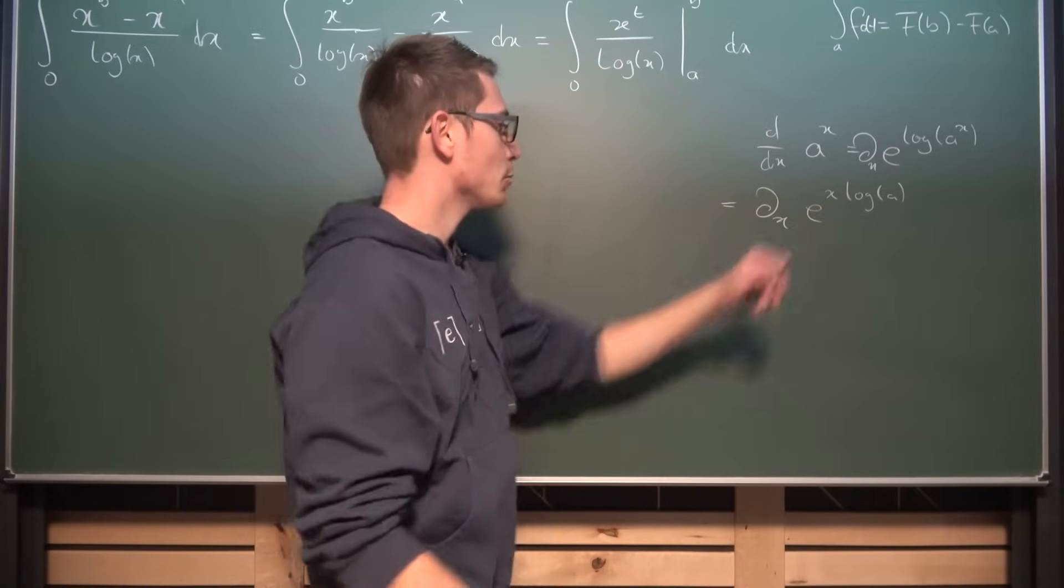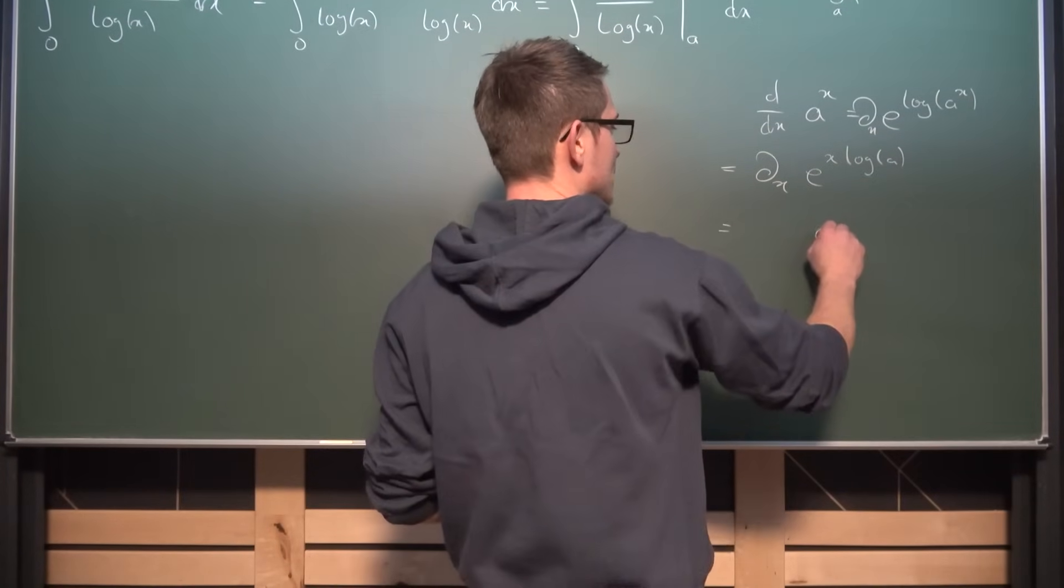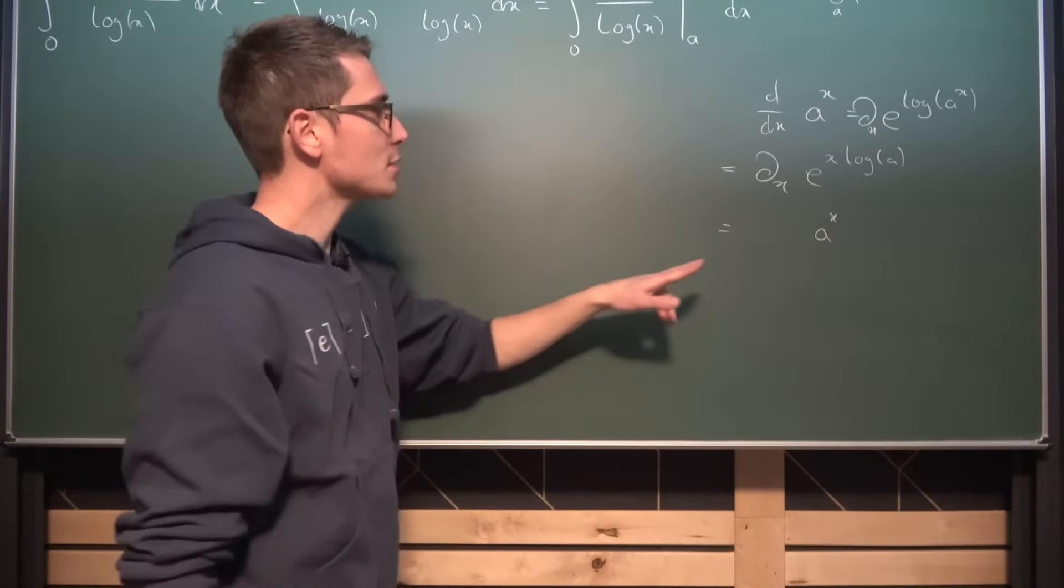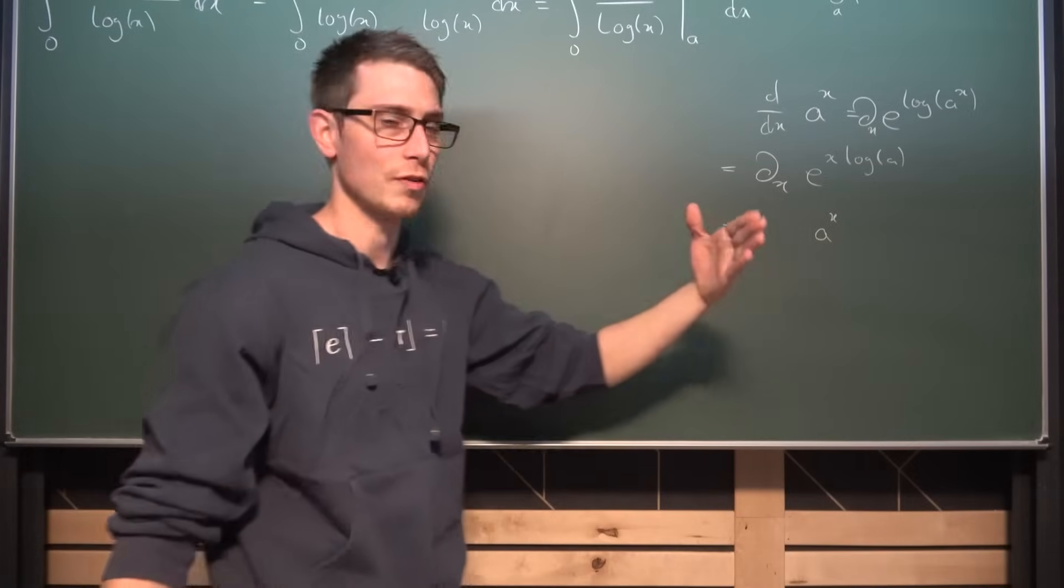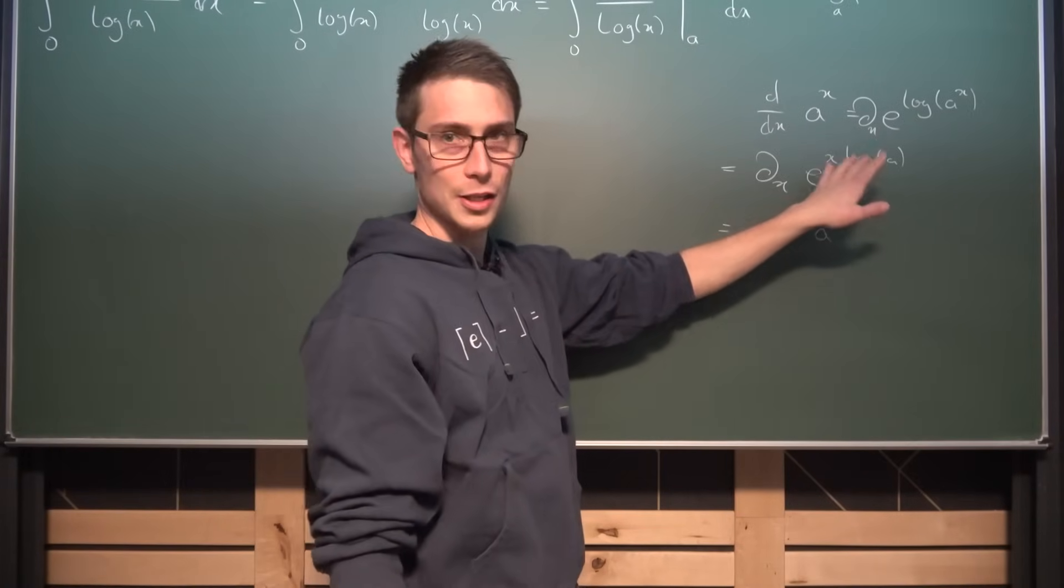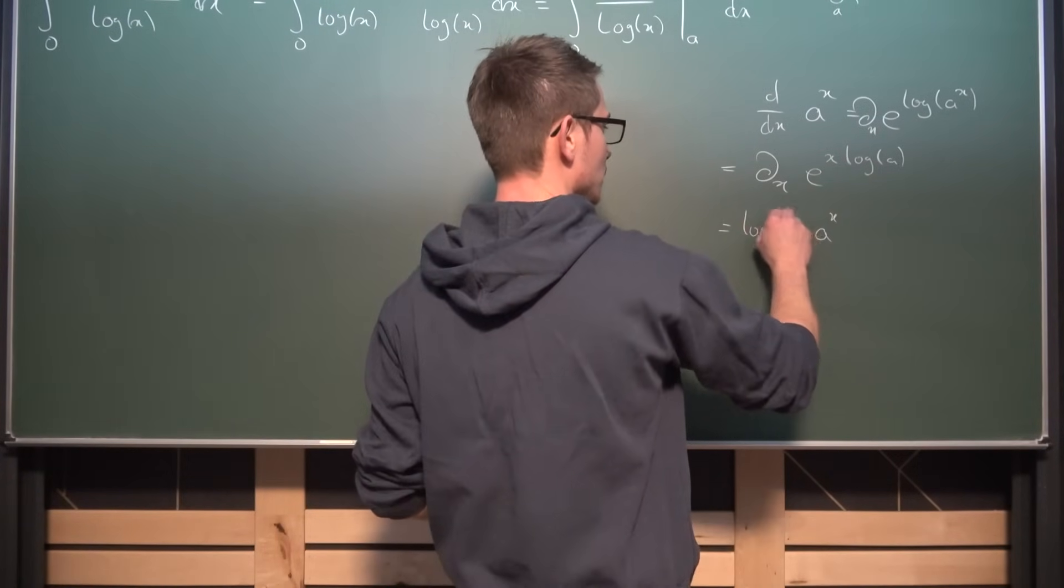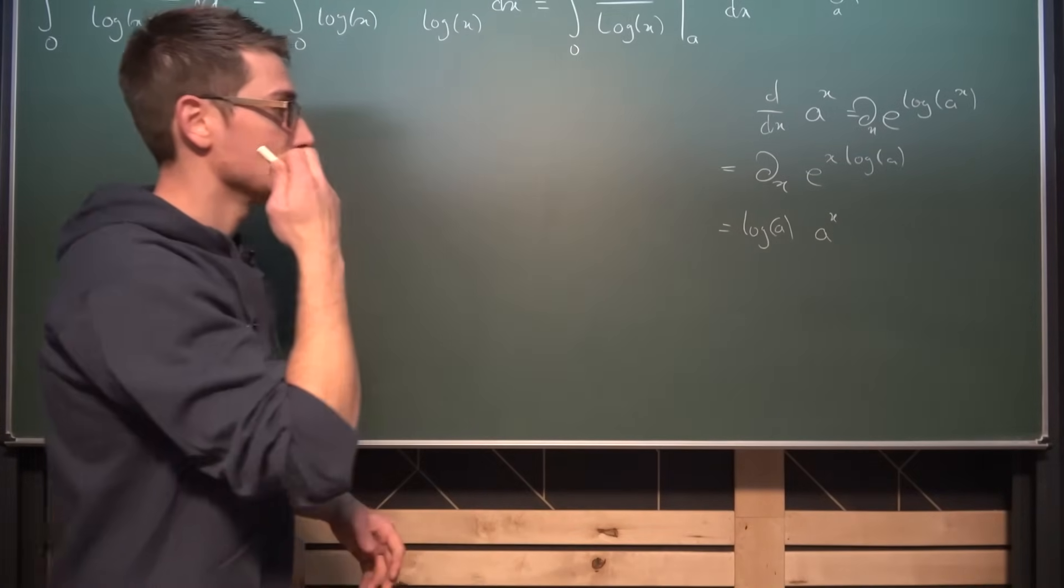And differentiating this is very easy because the exponential function gets preserved in the differentiation process, I'm sorry. Meaning we are going to get a to the x out once again, and what we also get is by the chain rule the differential of x times log of a, giving us just log of a as a constant here.